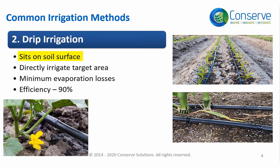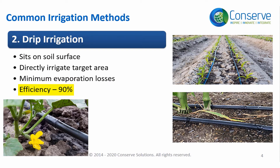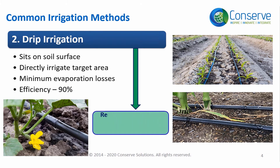Drip irrigation sits on the soil surface, or sometimes even subsoil, and directly irrigates the target area. Hence, evaporation losses in drip irrigation are minimum. Drip irrigation has an efficiency of around 90%, and projects should irrigate the maximum area of landscape with a drip irrigation system.